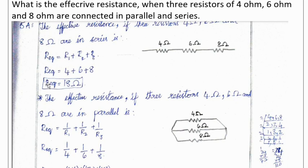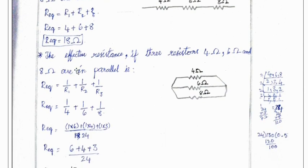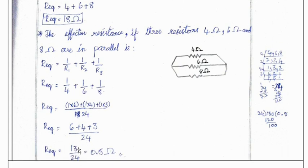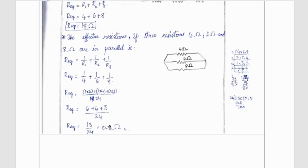When it is connected in parallel, it is given by the formula Rp = 1/R₁ + 1/R₂ + 1/R₃ which is 1/4 + 1/6 + 1/8 which gives 13/24 ohms, approximately equal to 0.4 ohms.